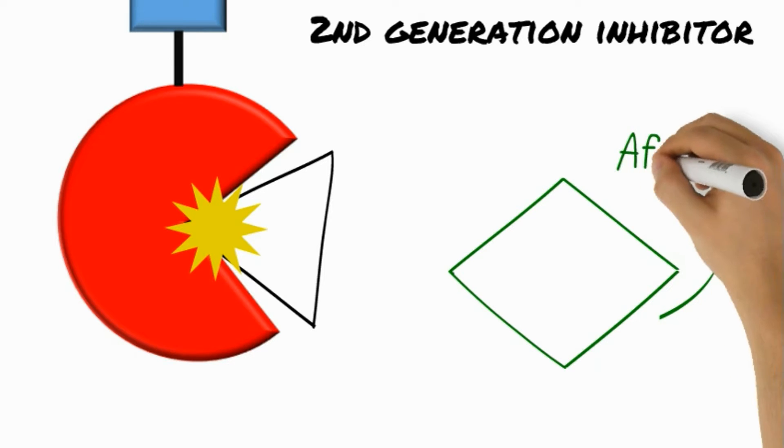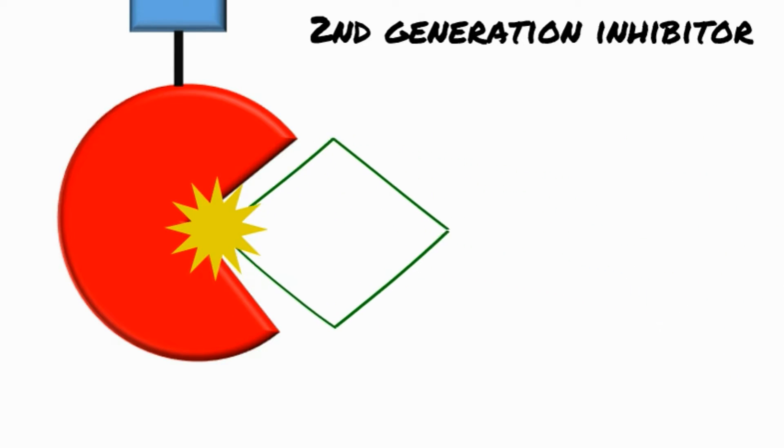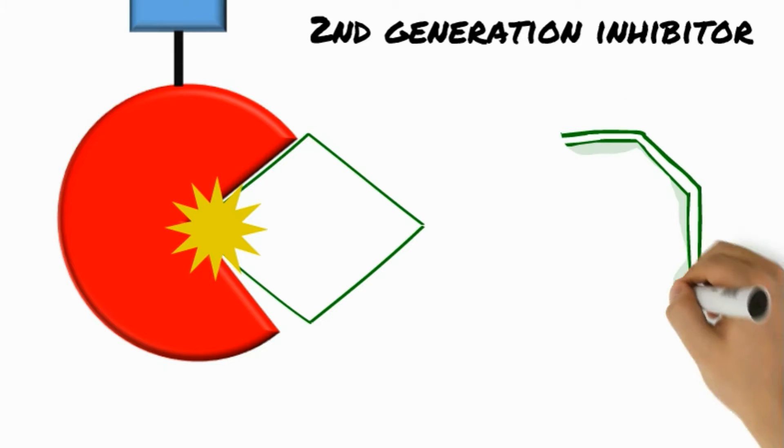The second generation inhibitor Afatinib can overcome this by again winning from ATP, thus inhibiting signaling again.